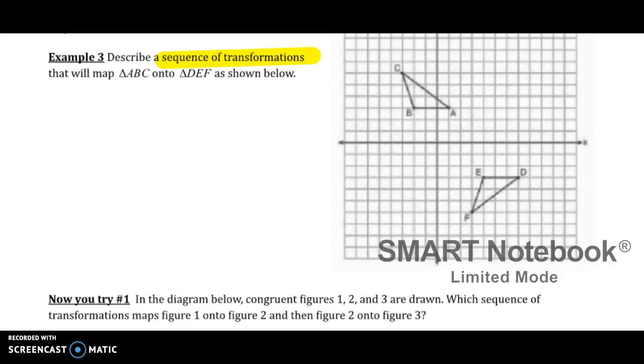That will map ABC onto DEF. We want to get into the habit of identifying our pre-image. I don't have to write the full word pre-image, I can just write pre, and this is going to be my image. So I know I'm trying to map ABC onto triangle DEF.